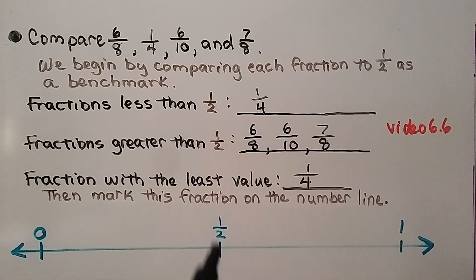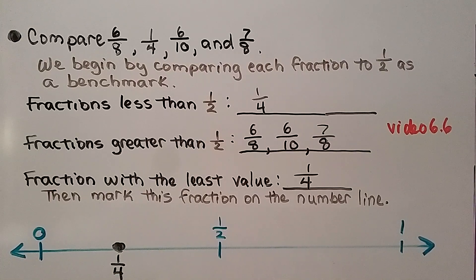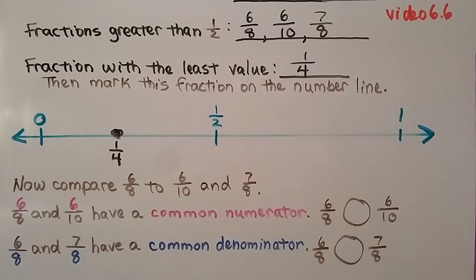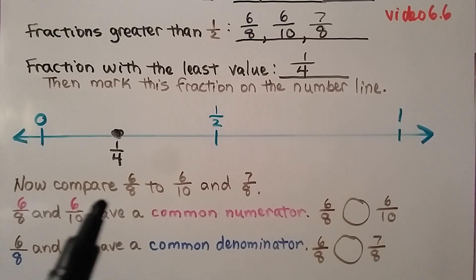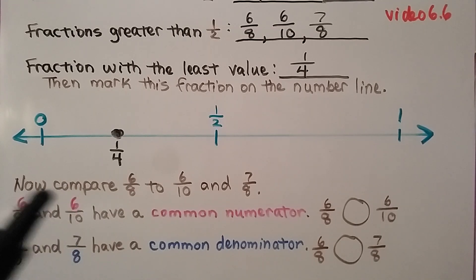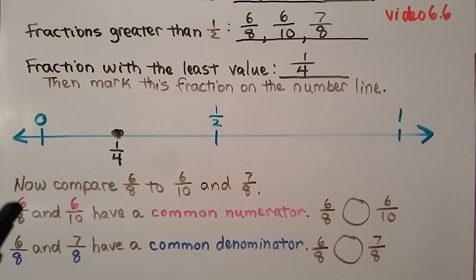We have a number line with zero, half for halfway, and one whole. If we split it into four equal parts, we'd have a split here and a split here — to have one, two, three, four equal parts — so this would be one-fourth, right here. Now we need to place the remaining fractions. Six-eighths and six-tenths have a common numerator, so we look at their denominators to see which has bigger parts. The smaller denominator means larger parts — eight is less than ten, so six-eighths is greater than six-tenths.